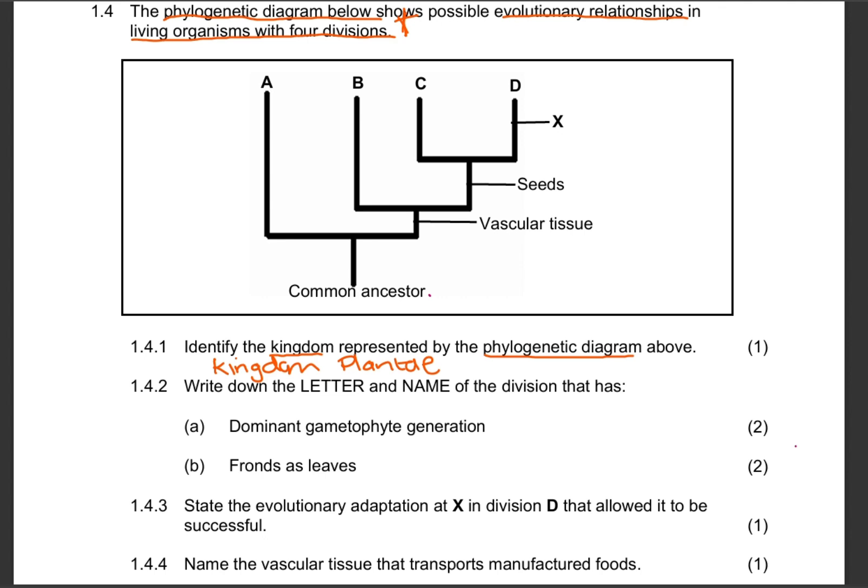This is easy to determine because of the four divisions of the living organisms and also because of the presence of seeds and the vascular tissue in the phylogenetic diagram. Let's move to the second question, 1.4.2.